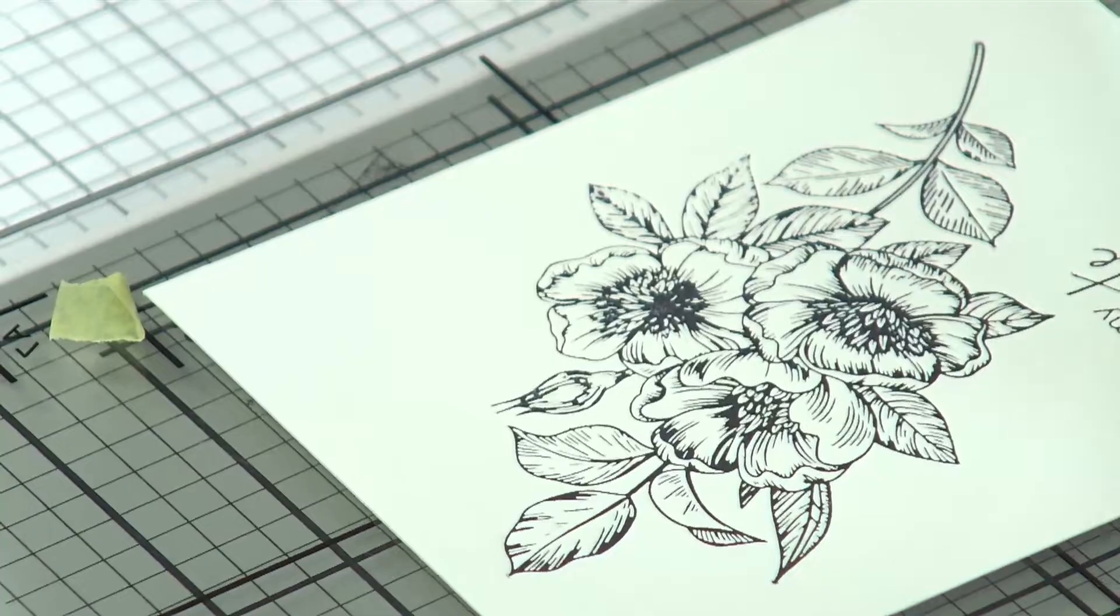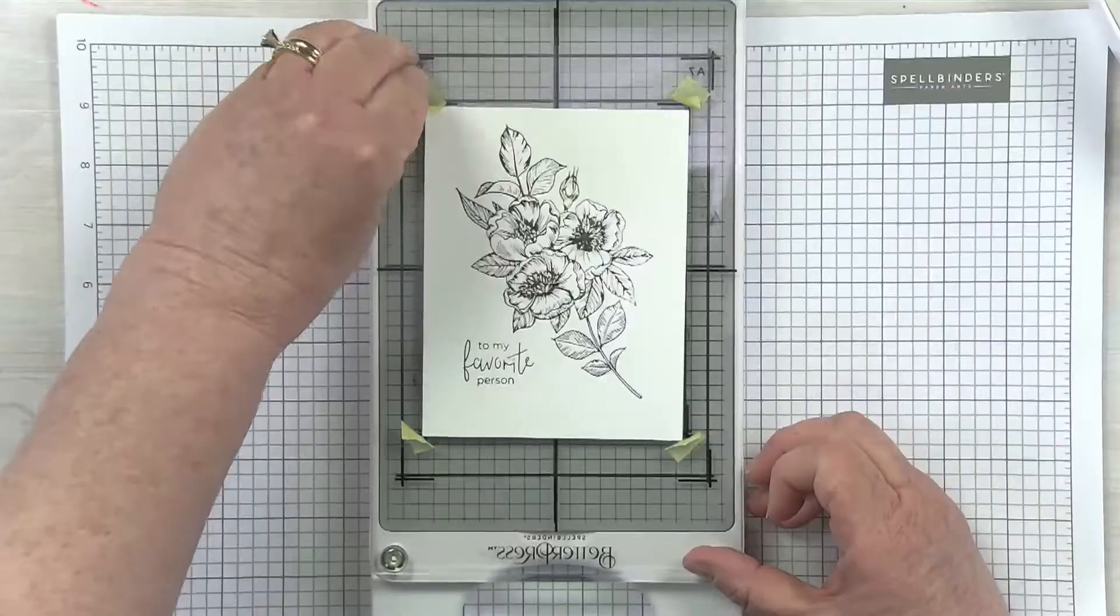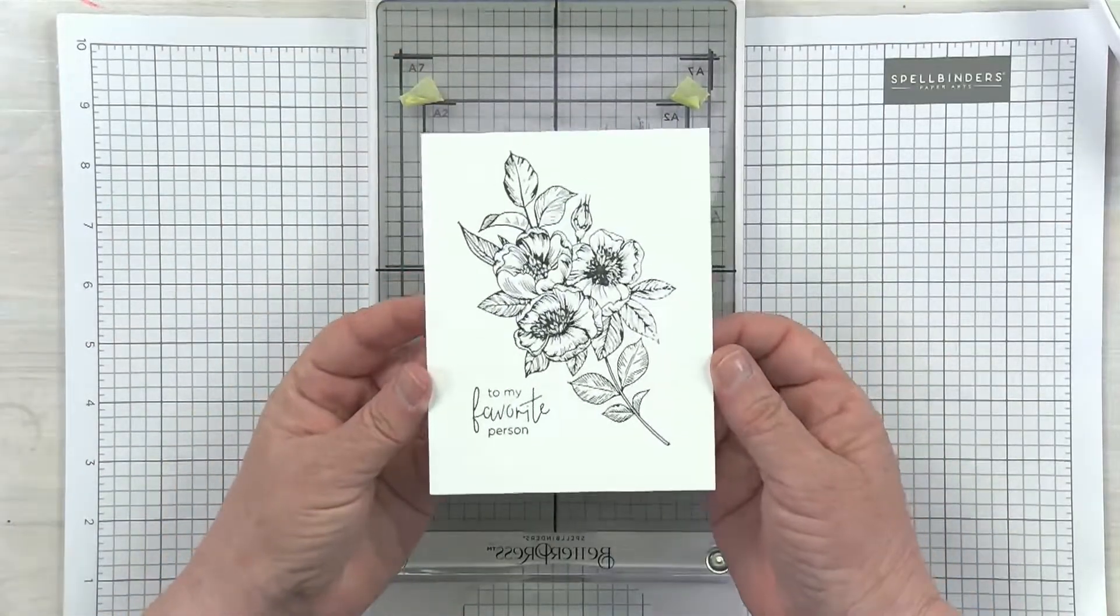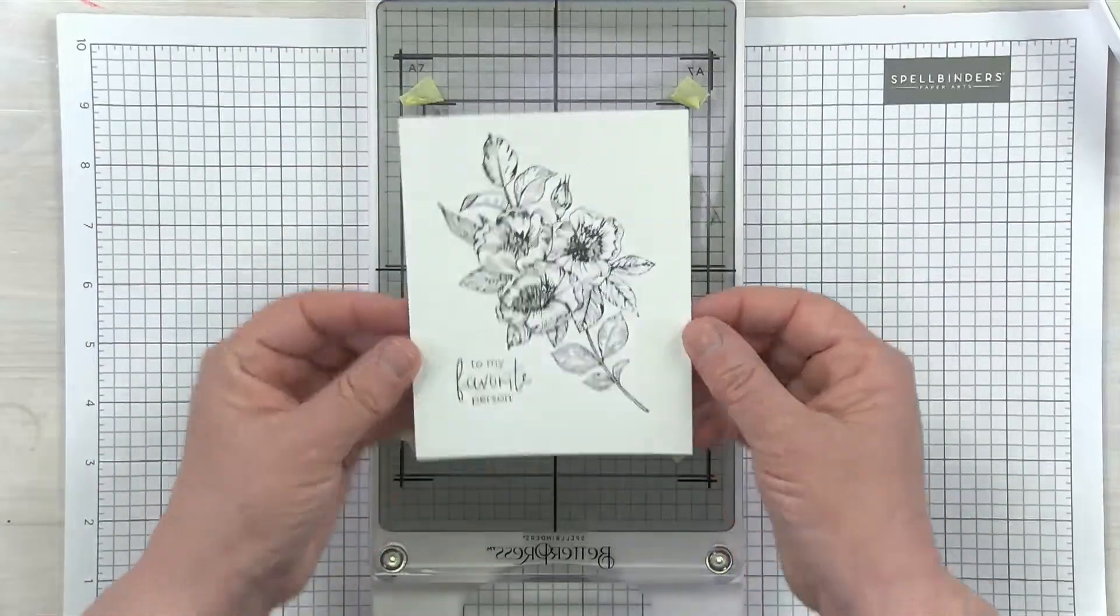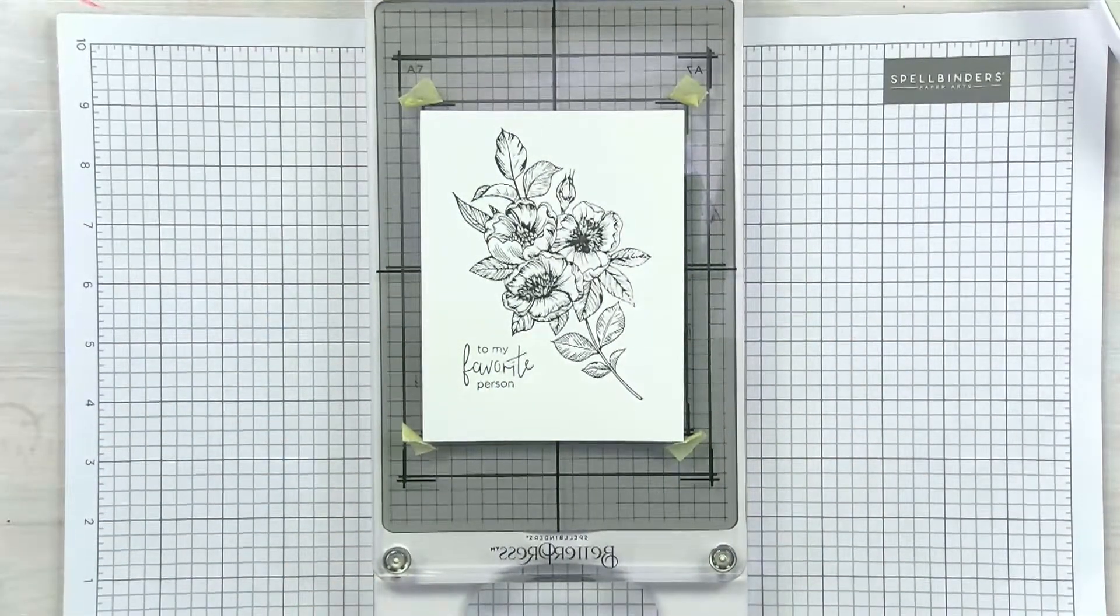You're all set to do a variety of things. You can add some color to it or add a few embellishments, maybe some gems. Pop that on a card base and you have a stunning finished project. I hope you saw how easy that was to create a Better Press print. I know you'll be diving into your starter kit and adding additional Better Press plates. We have stunning designs available here at Spellbinders. Check them all out. Try your first print. I know you'll have fun and we'll see you in the next video.